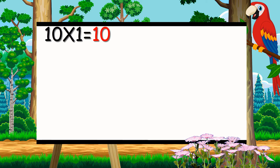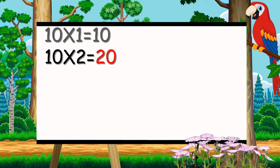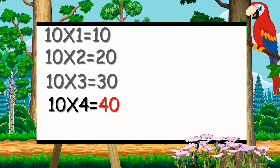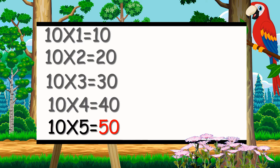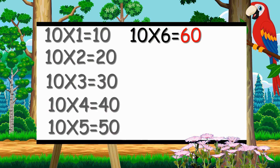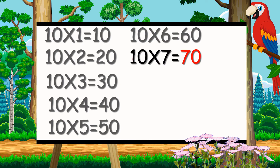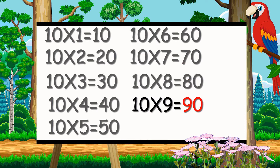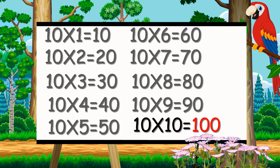10 ones are 10, 10 twos are 20, 10 threes are 30, 10 fours are 40, 10 fives are 50, 10 sixes are 60, 10 sevens are 70, 10 eights are 80, 10 nines are 90, 10 tens are 100.